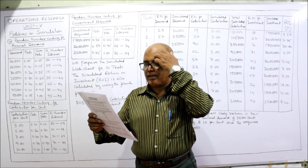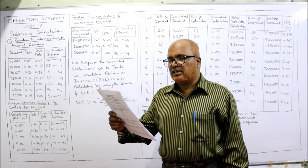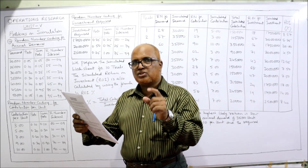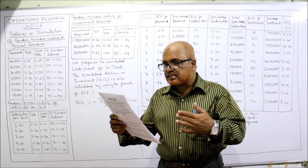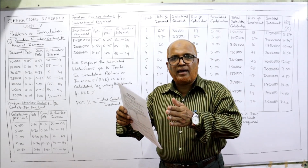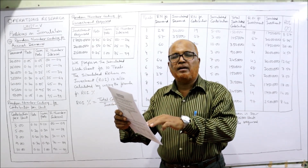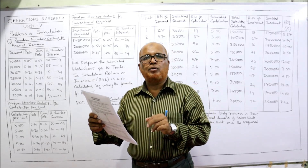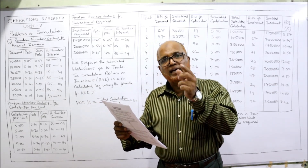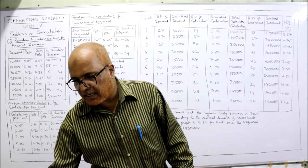The random numbers are given — 28, 19, 18, 57, and so on. We use the first three random numbers for the first run, the next three for the second run, and so on. Each set of three random numbers corresponds to one run: the first random number is for demand, the second for contribution, and the third for investment required.